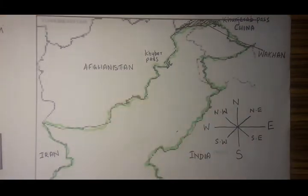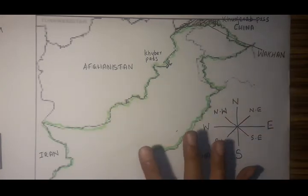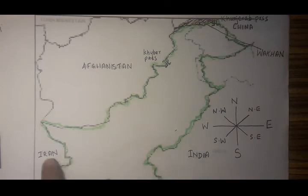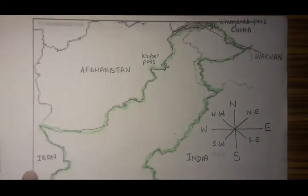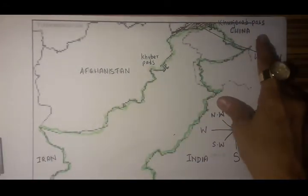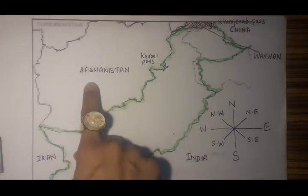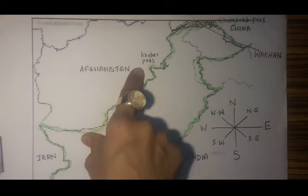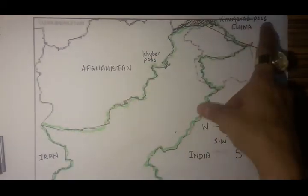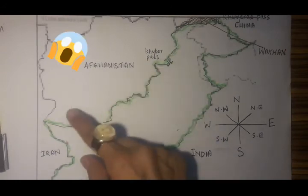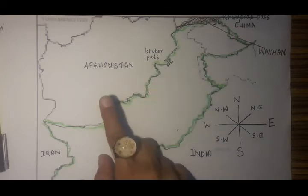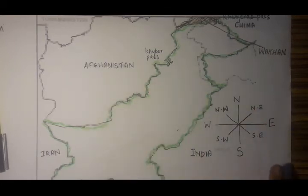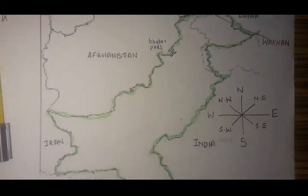Let's quickly revise. This is the map of Pakistan. The four neighbors are Afghanistan, China, India, and Iran. To the northwest is Afghanistan, to the southwest is Iran, to the north is China, and to the east is India. With Afghanistan we are connected by the Khyber Pass, with China by the Khunjerab Pass. The borderline between Pakistan and Afghanistan is called the Durand Line. The Arabian Sea is on the south of Pakistan.